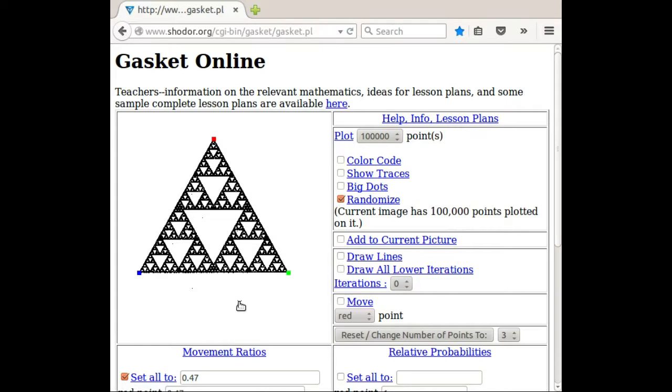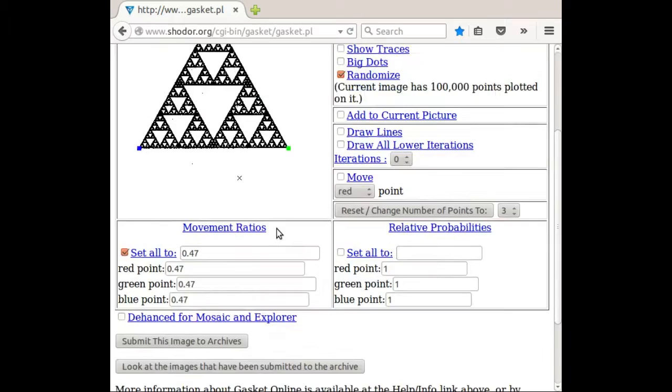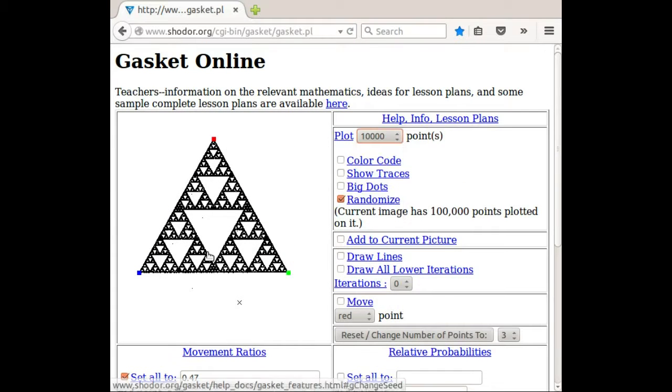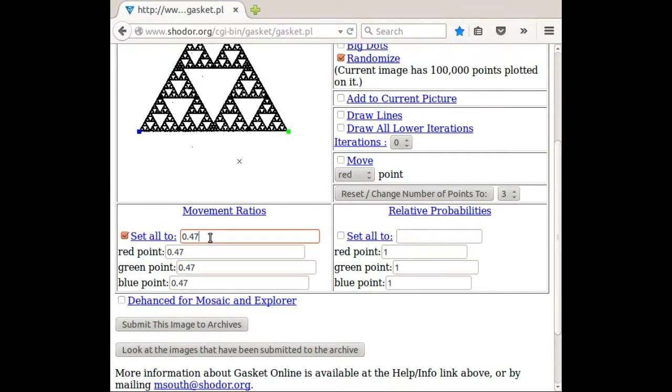Let's get a few more points. So the shape is a little bit different. Let's go back to 10,000. Maybe we can exaggerate this a little more. Let's go to 0.44, see what that looks like.